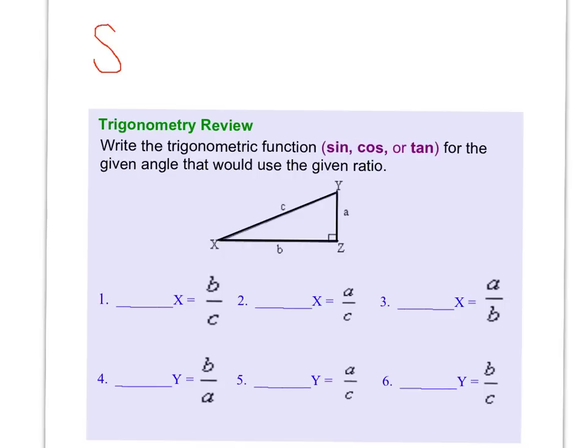So I'm just going to write it up here. Sine, and so I use S, is equal to opposite over hypotenuse, so that's SOH. CAH, cosine, is equal to adjacent over hypotenuse, and TOA, tan, is equal to opposite over adjacent.